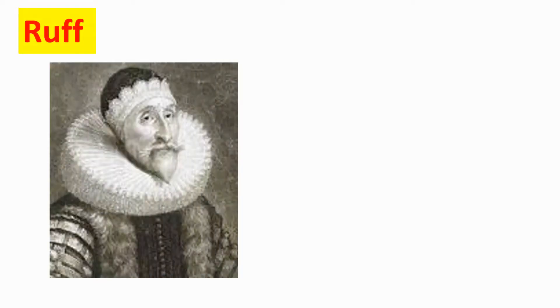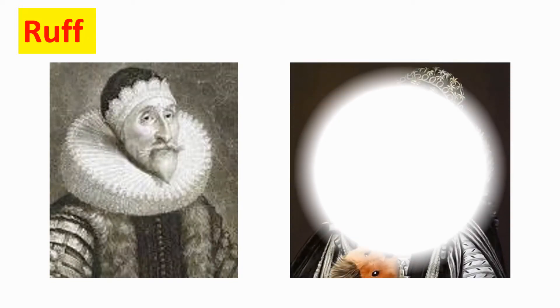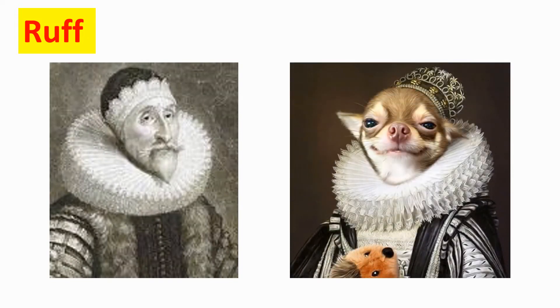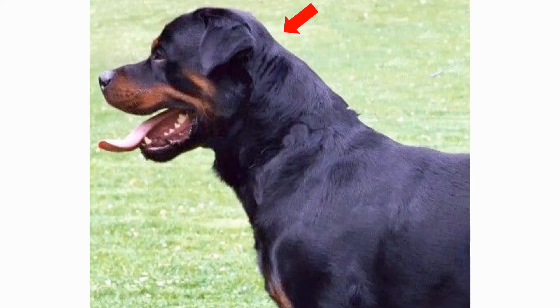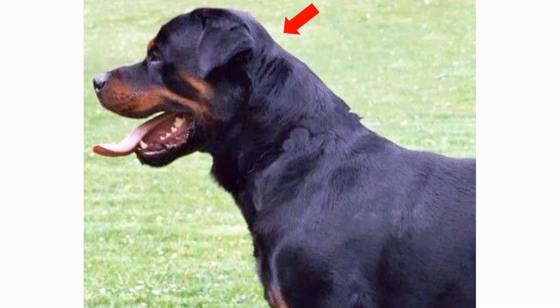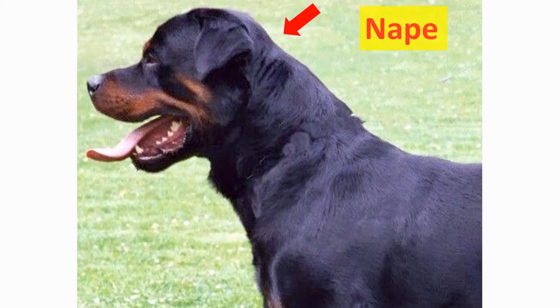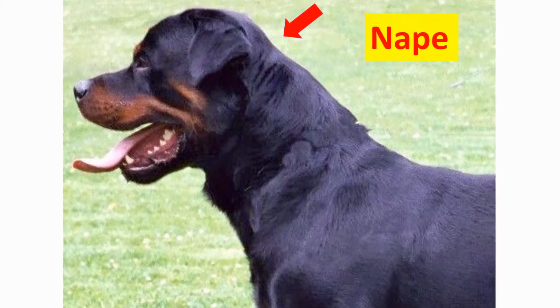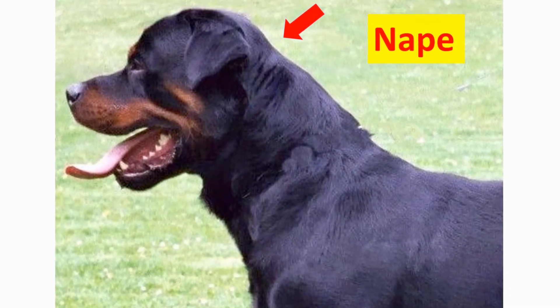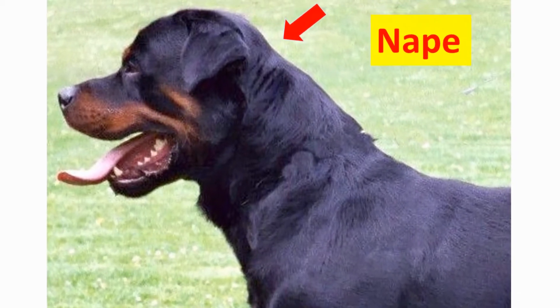Ruff — a circular frill or ruffle on a garment for us, but for dogs it means the thick dense hair around the top of the neck. The nape of the neck is where the neck joins the base of the skull at the back of the head.